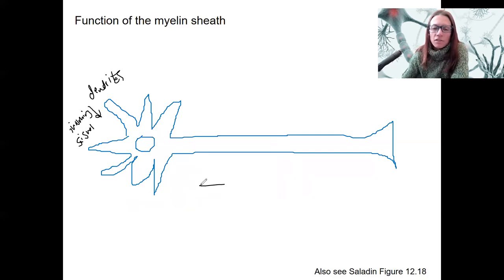And we're going to have an action potential, which is our electrical signal, travel this way towards our axon terminal, where we're going to have a synapse with something else.